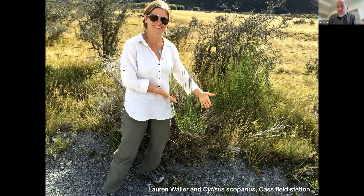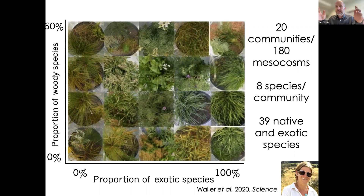But path analysis aside, it's still an observational study and doesn't separate cause and effect clearly. So what we needed was a proper experiment. This was a huge undertaking led by Lauren Waller and Warwick Allen. They went out and built mesocosms — 180 large pots, each planted with eight different plant species in 20 different community types, drawing from almost 40 different plant species total. They were arranged from zero to 100% exotic plants, and to study grasslands to shrubland, they also ranged from zero to 60% woody plants — every possible combination.